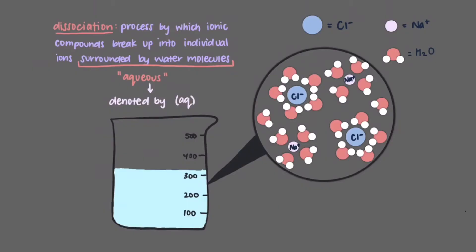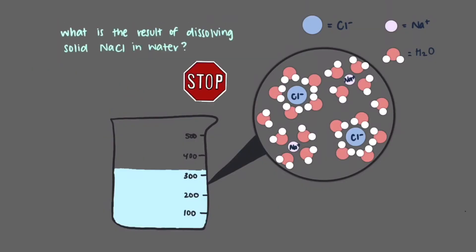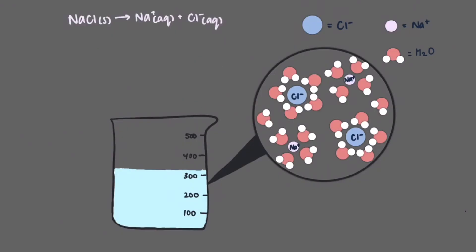We've already said that ionic compounds break apart into individual ions in water. What then is the result of dissolving solid sodium chloride in water? The reaction is written as follows: NaCl solid yields Na plus aqueous plus Cl minus aqueous. Each individual ion will be surrounded by water molecules, so we must write them separately in the products.